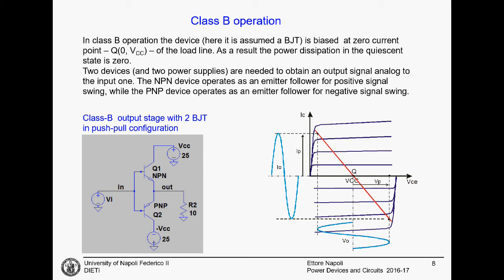Class B operation. The typical Class B operation circuit, you probably also studied this one, is made with two devices. In this case we focus on BJT, there is a PNP and an NPN transistor.